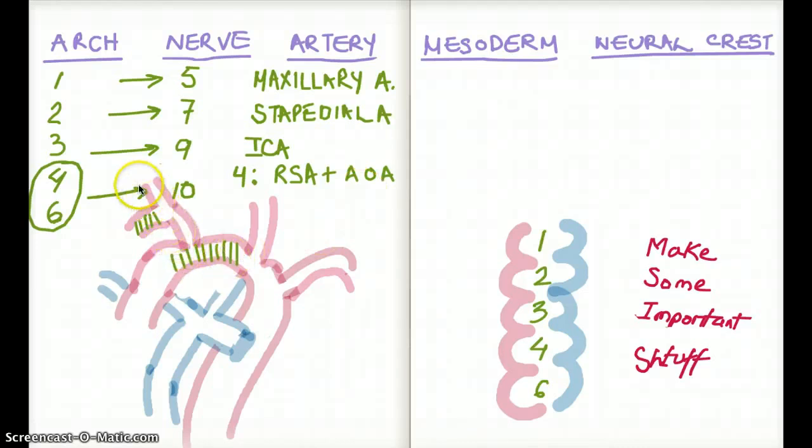What about the common carotid, the right common carotid? Which brachial arch gives rise to right common carotid? You see number 3, arch number 3 gives rise to internal carotid?